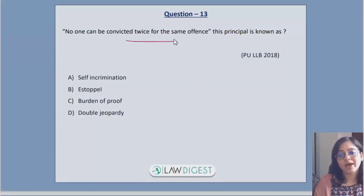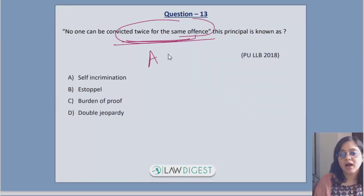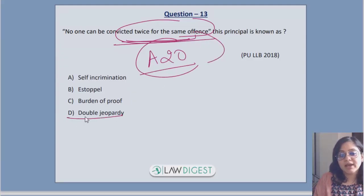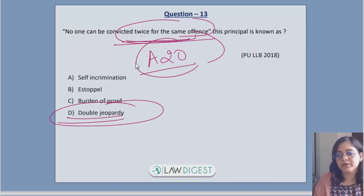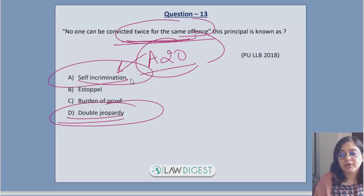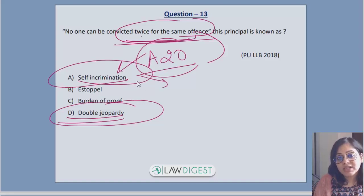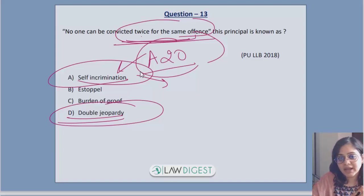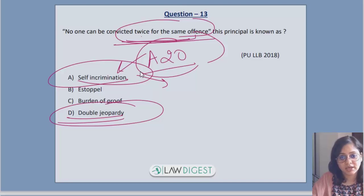Question 13 deals with the principle that no one can be convicted twice for the same offense. This principle is incorporated in Article 20 of our Constitution — it is the principle of double jeopardy, meaning a person should not be punished twice for the same offense. Article 20 also includes self-incrimination, which means no one can be forced to give a confession or to incriminate themselves in a crime.